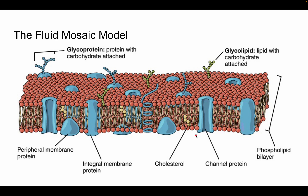Briefly, the fluid mosaic model describes the phospholipid bilayer as containing proteins embedded within the membrane — it's not just the membrane alone. These proteins do different things and allow different molecules to pass in and out. We'll discuss diffusion and transport in detail later.